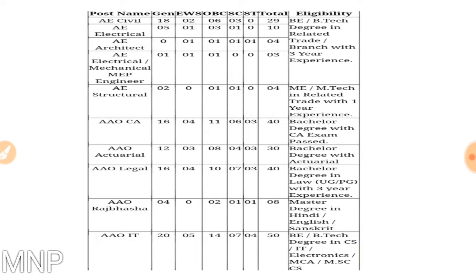For eligibility, most posts require a BE/B.Tech with the related trade. Three years of experience is required for civil, electrical, architect, electrical mechanical, and MEP engineer posts. For the structural post, ME/M.Tech in the related trade is required with one year of experience. Similarly for WAO CA, WAO actuarial, WAO legal, WAO Rajbhasha, and WAO IT, you should have a bachelor's degree in the related trade to apply.